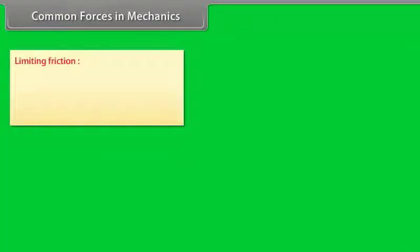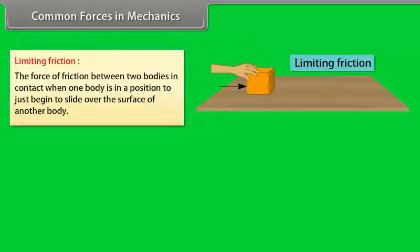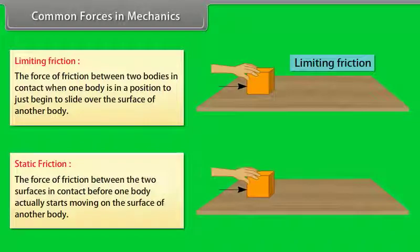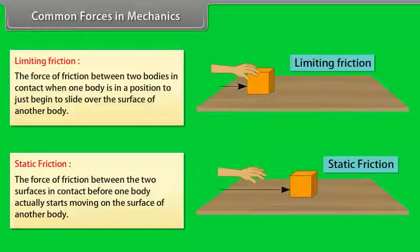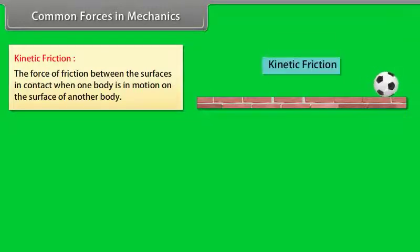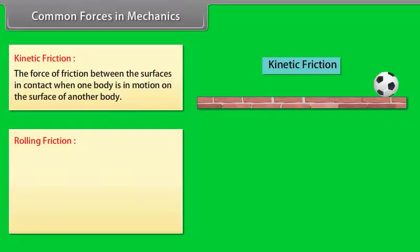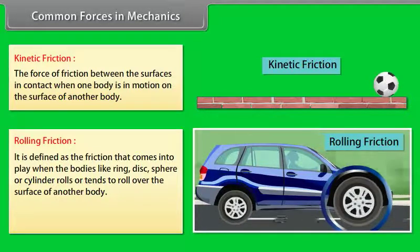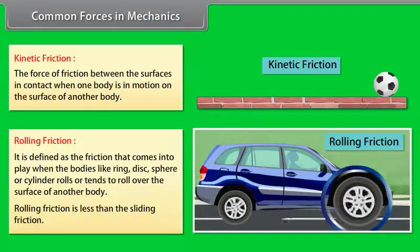Limiting Friction is the force of friction between two bodies in contact when one body is about to just begin sliding over the surface of another. Static Friction is the force of friction between two surfaces before one body actually starts moving. Kinetic Friction is the force of friction when one body is in motion on the surface of another. Rolling Friction is the friction when a body such as a ring, disc, sphere, or cylinder rolls over a surface — it is less than sliding friction.